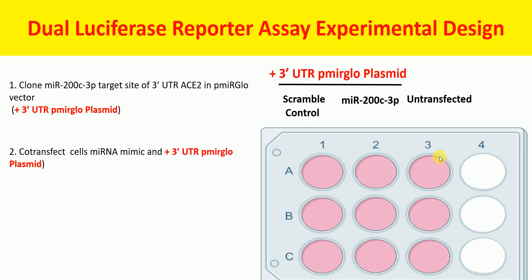Let's say that you have 12-well plates and you have to make 3 different groups. Group 1 is scramble control — 3 wells. Group 2 is MIR200C3P — 3 wells. And group 3 is untransfected cells. These untransfected cells are included as a background control. We co-transfect scramble control and 3' UTR pMIRGLO plasmid in group 1 wells, MIR200C3P mimic and the 3' UTR pMIRGLO plasmid in group 2 wells, and group 3 wells are left untransfected.